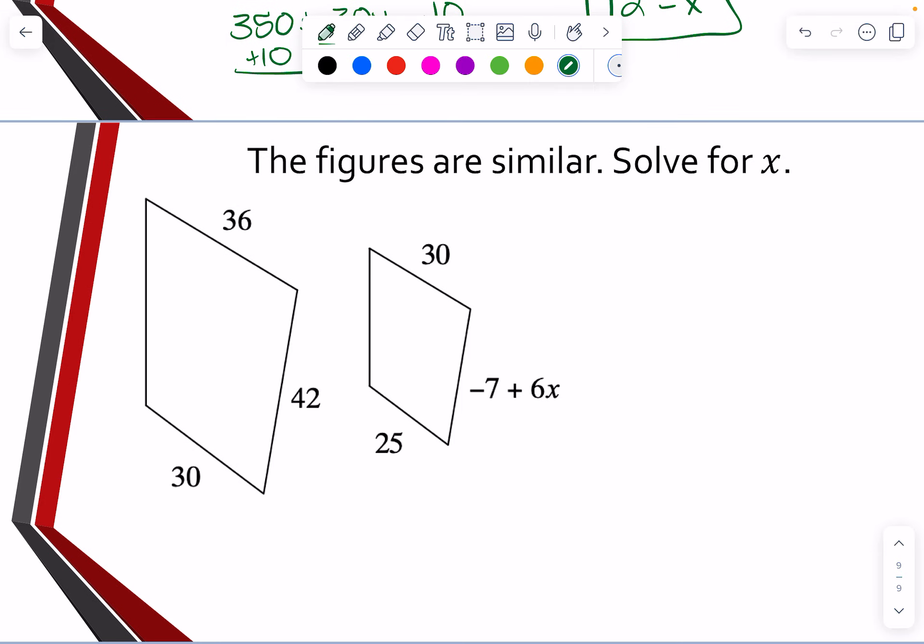Last one. Let's try this one. We have 30 is to 25 as 42 is to negative 7 plus 6X. Now we could do this one the way it is. I'm going to change it up just a little bit just to show you. Five goes into both of these. So I'm going to make this six over five instead. So that just makes the numbers a little bit easier to work with.